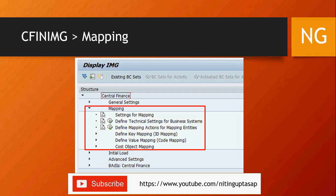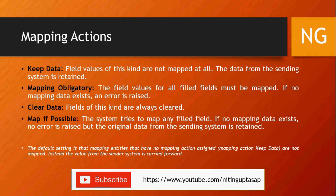We have four mapping actions: Keep Data, Mapping Obligatory, Clear Data, and Map If Possible. Each has its own responsibility and functions in a different way.